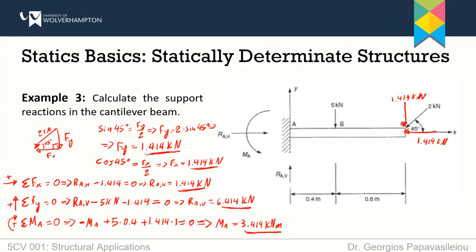Another common mistake is using kilonewtons as units for a moment reaction. If you don't have a fixed support, you won't have any moment reactions — so many students default to using kilonewtons only. The correct units depend on the type of reaction; kilonewtons is not a universal answer.